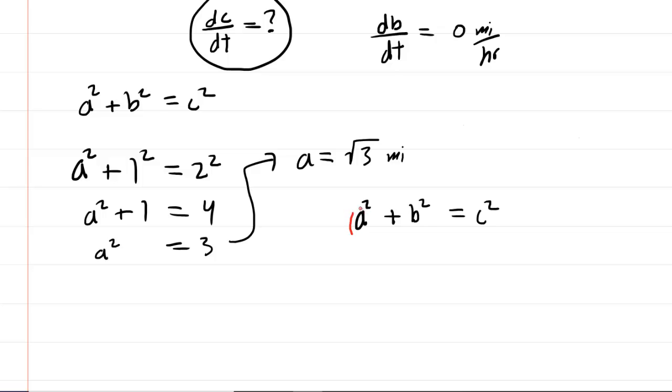with A squared, we would take the 2, this original power, and move it down in front. That would give us 2 times A raised to the power of 1, of course, because we have to subtract 1 from the exponent. But then the chain rule says to multiply by the derivative of this inside function. And in this problem, the derivative of A with respect to time would be da/dt.